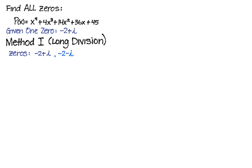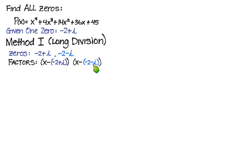Zeros allow us to find factors. We know that a factor is always x minus a zero. So this is going to be x minus (negative 2 plus i), and then for the other zero, x minus (negative 2 minus i). We know that factors mean these are parts we can multiply, and we will get a product, and that product will also be a divisor of this fourth degree polynomial.